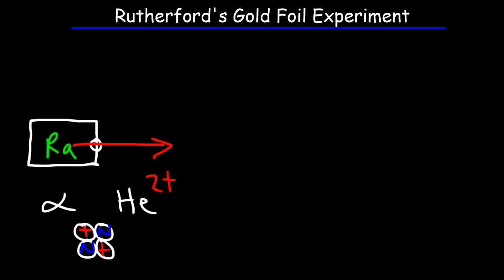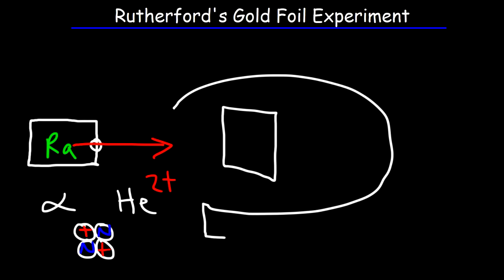What he did with these alpha particles is that he beamed them at a gold foil. This gold foil was surrounded by a detector, which looks something like this. My drawing's not perfect, but you get the picture. This particular detector was coated with a fluorescent substance, so when the alpha particles were to hit it, it would flash.